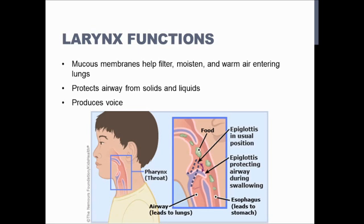The trachea continues on from the larynx. The pharynx separated into the larynx and went on to become the esophagus for the digestive system, while the larynx went on to become the trachea for the respiratory system. The trachea is also known as your windpipe. It's about four and a half inches long and one inch wide, and it's composed of cartilaginous rings that keep it open. If it were composed of anything flimsier, it would be really hard to keep your airway open.